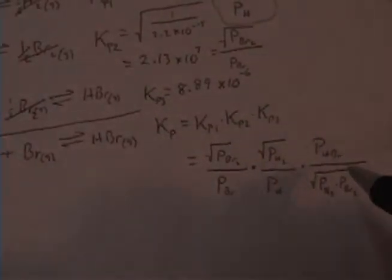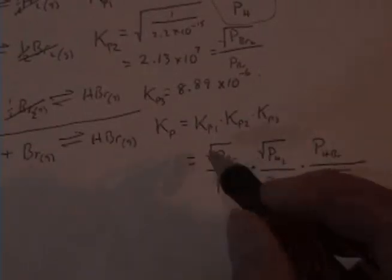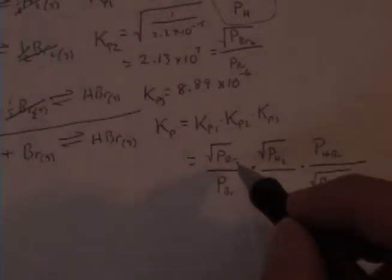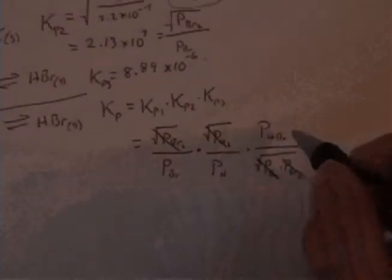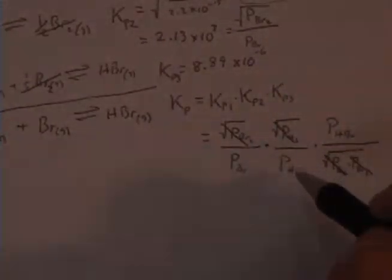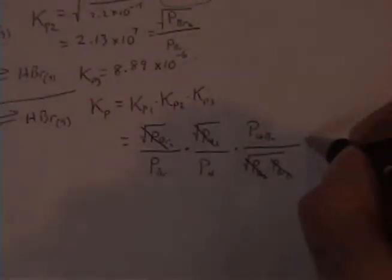So you see that when I multiply those across, here I have the pressure of the Br2 under a square root. That will cancel there. And here I have the pressure of the H2 under square root. That cancels there. And I end up with the products of my new reaction over the reactants. So indeed, that works out.